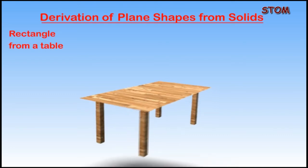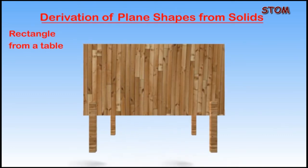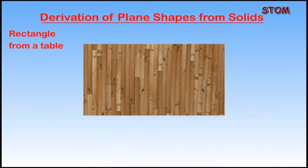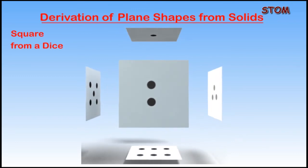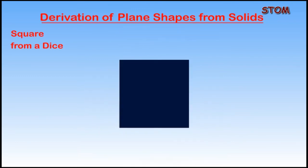Take a look at the table as shown on the screen. The surface of the table is seen to be rectangular. A square can be derived from the surface of a dice, which are used in various games.